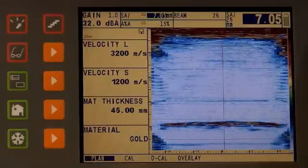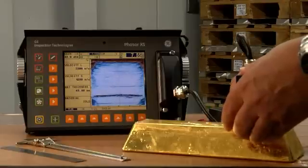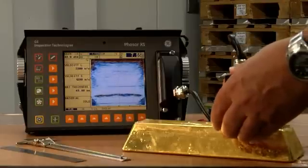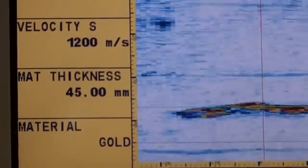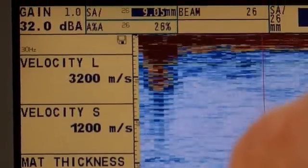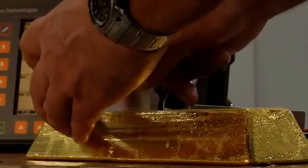So we've got a cross-sectional view and as we move the probe we're effectively non-destructively looking inside the gold bar wherever we position the probe. If we had an air gap, a void, another material inserted in there, the image on the screen would clearly display that.